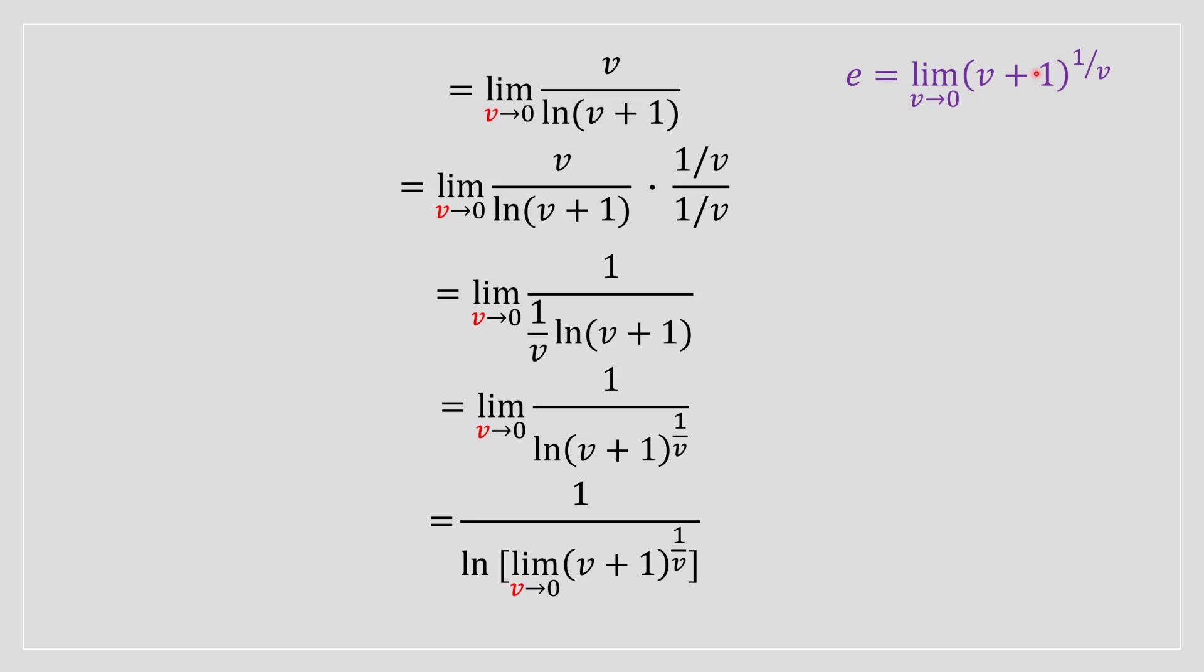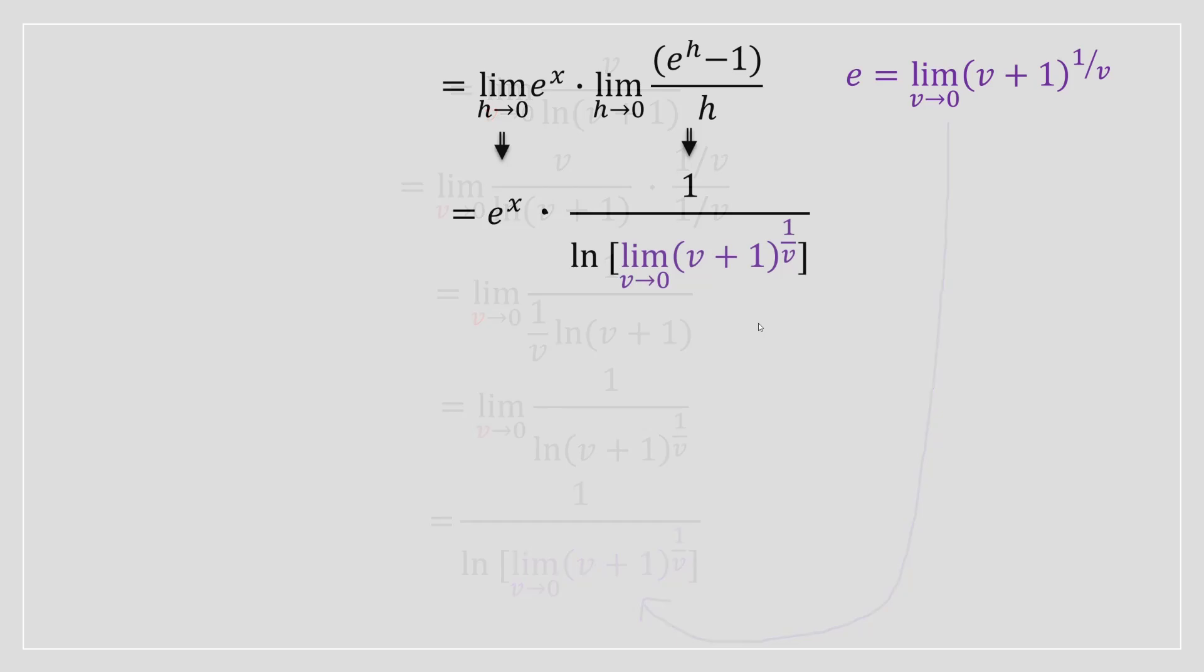we can replace this limit with e. And what we're going to be left with once we do that is 1 divided by ln of e. ln of e in this case is 1. 1 divided by 1 is equal to 1. And we're just going to be left with e to the power of x.